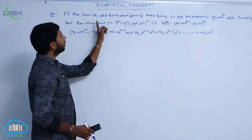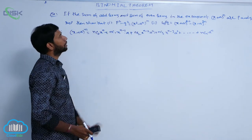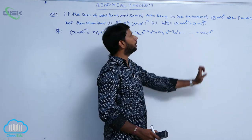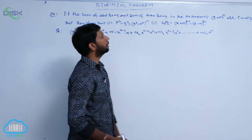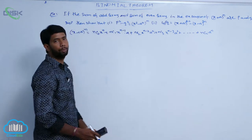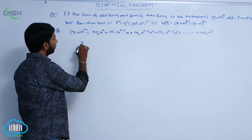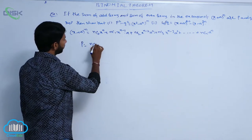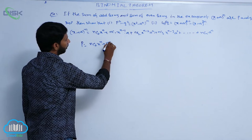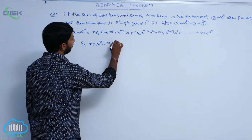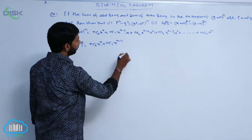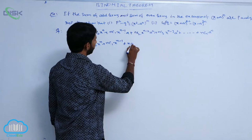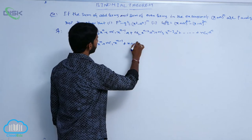Given the sum of odd terms is represented as p and sum of even terms represented as q. That is, p is equal to sum of odd terms: nC0 · xⁿ + nC1 · x^(n-1) + nC3 · x^(n-3) · a³ + and so on.